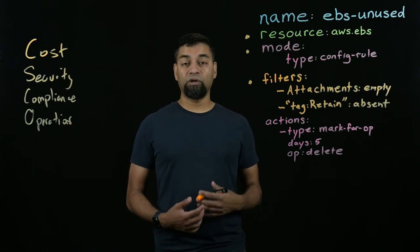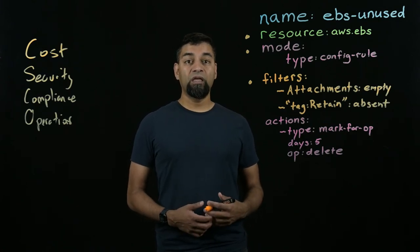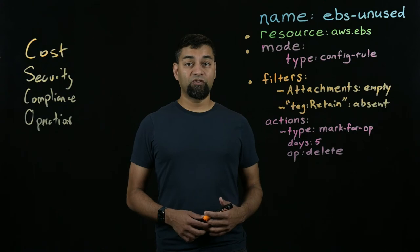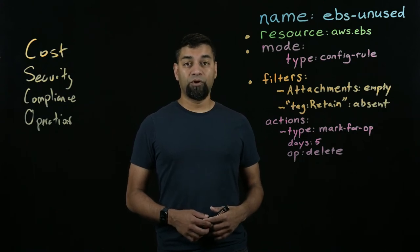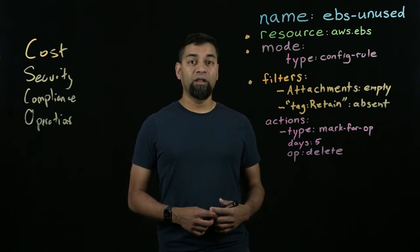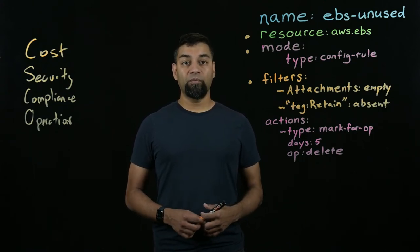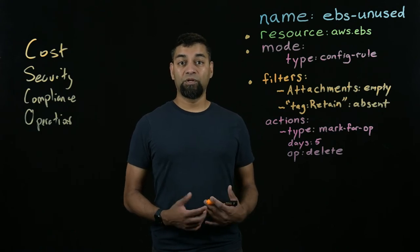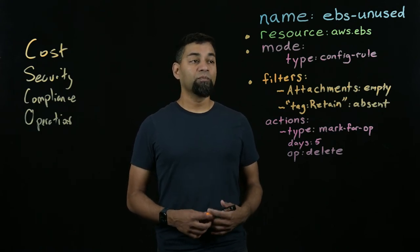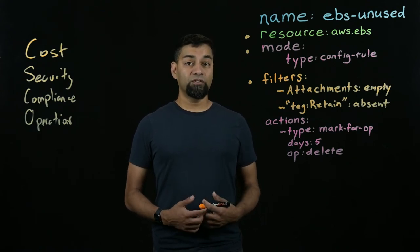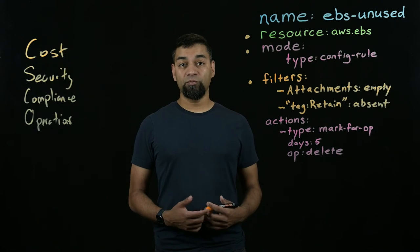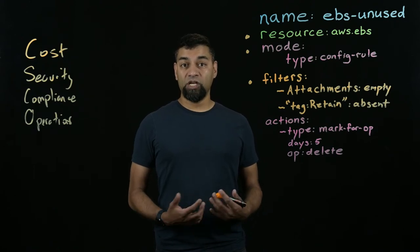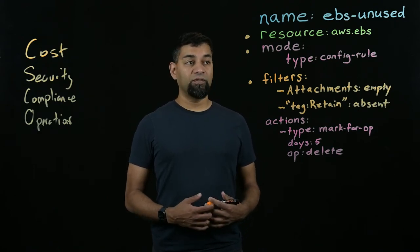Custodian also supports a whole other class of execution modes called event-based execution modes. When you have a policy with an event execution mode and you run it on the CLI, it'll actually provision a serverless runtime appropriate for your cloud environment, as well as hook up the event sources to invoke that function whenever resources change. This is what gives Custodian its power to do real-time enforcement and detection of changes inside of the environment.